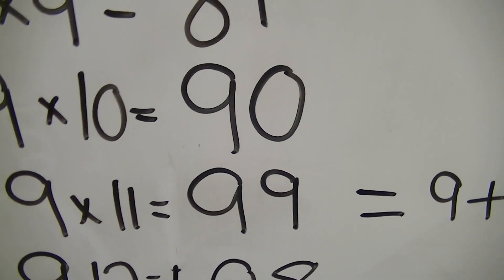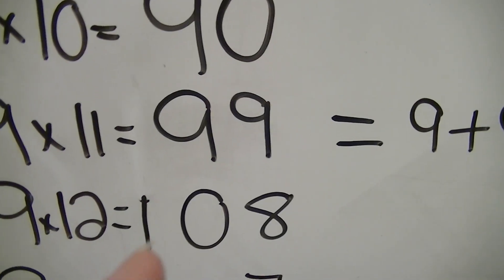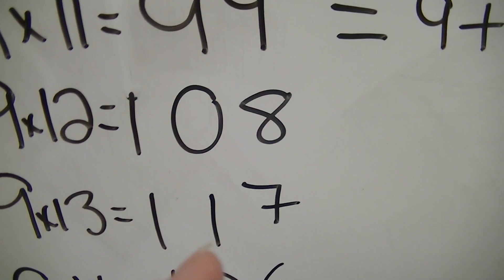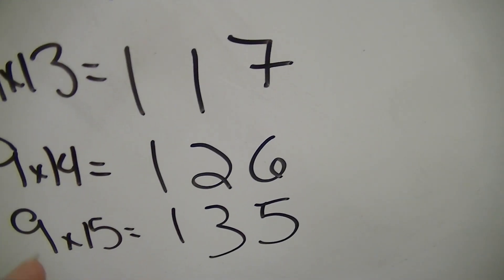Now, you're going to go up by 2. 2 more than 9? 11. 2 more than 10? 12. 2 more than 11? 13. 2 more than 12? 14. 2 more than 13? 15. So, that's a little trick of the trade that you can think, okay, now I know 9 goes into it.